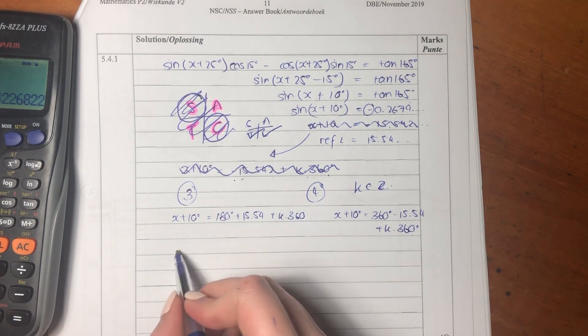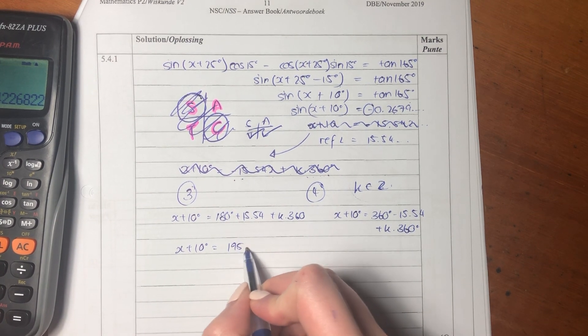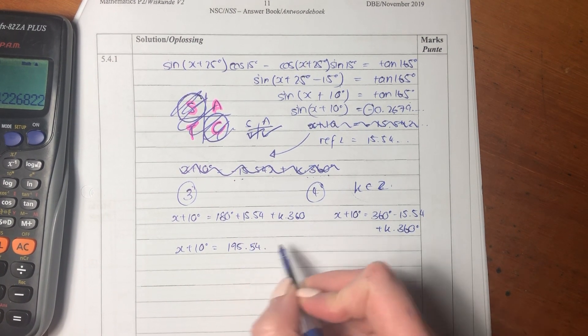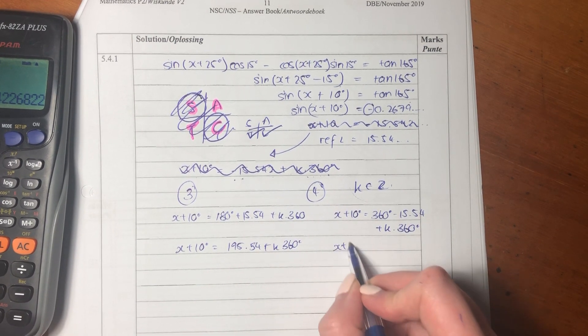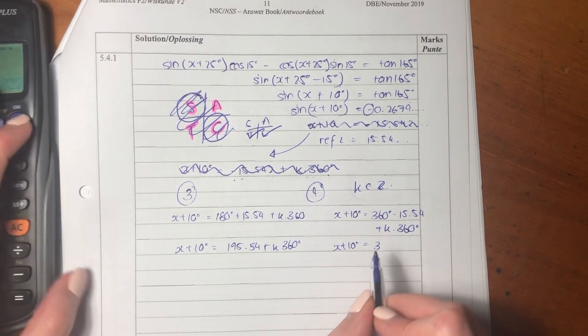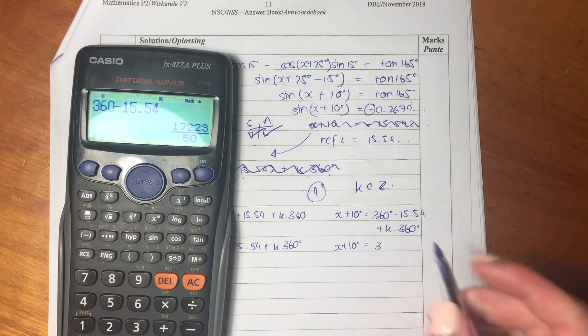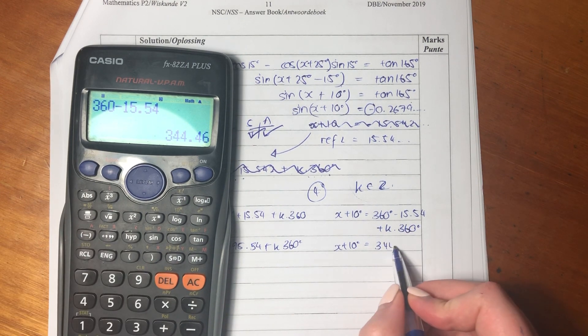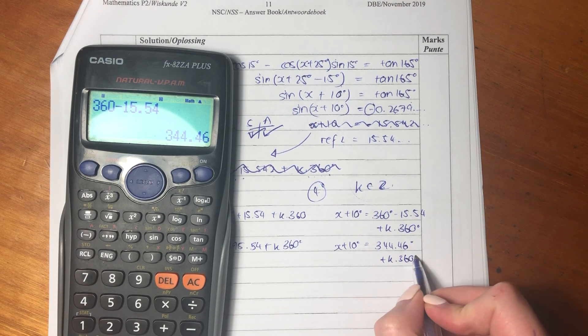So we know that x plus 10 is going to equal 180 plus 15.54 plus k times 360 in the third quadrant. In the fourth quadrant, we have x plus 10 equals 360 minus 15.54 plus k times 360. Now let's just quickly simplify it. So x plus 10 equals 195.54 plus k 360. You have x plus 10 equals, let's put that in our calculator, 344.46 plus k 360.